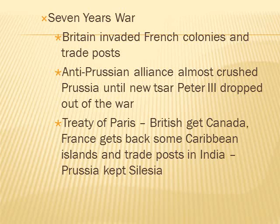The Seven Years' War was basically a continuation of that conflict. Britain invaded French colonies and trade posts. An anti-Prussian alliance almost crushed Prussia until the new Tsar Peter III, not the brightest, dropped out of the war because he admired the Prussian leader. The Treaty of Paris: Britain gets Canada, France gets back some Caribbean islands and trade posts in India, and Prussia keeps Silesia.